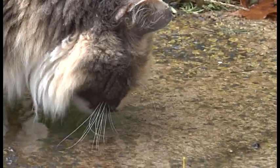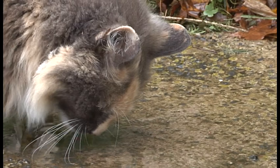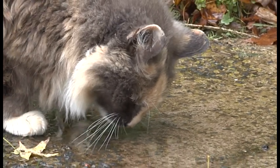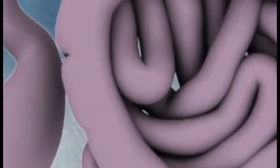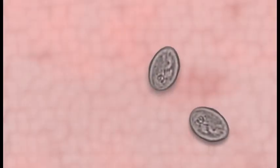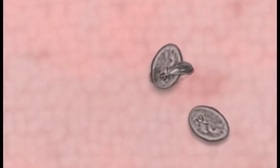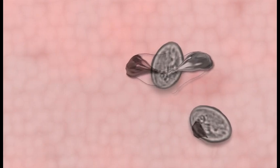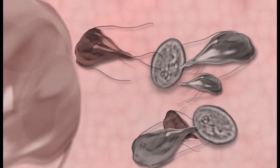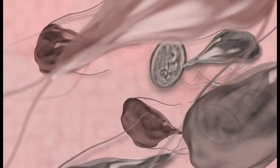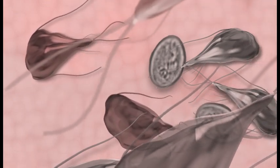Cats contract Giardia infections by consuming water or food that has been contaminated with cysts. Inside the small intestines, these cysts release trophozoites, some of which attach to the mucosal wall. As trophozoites move into the large intestine, some develop a cyst wall, which provides protection when they exit the cat through its stool.